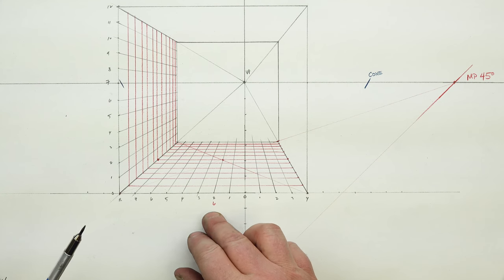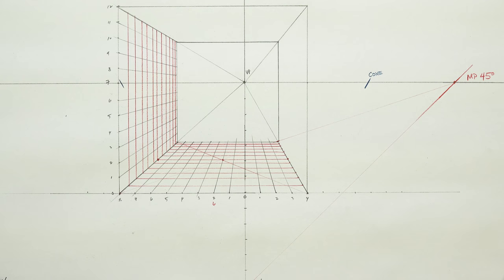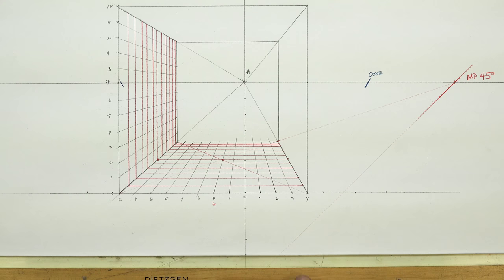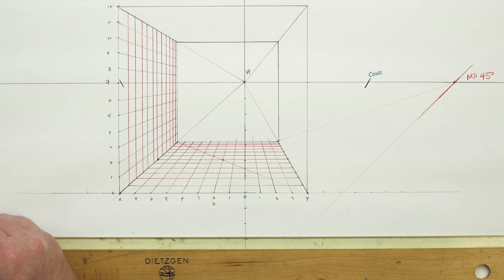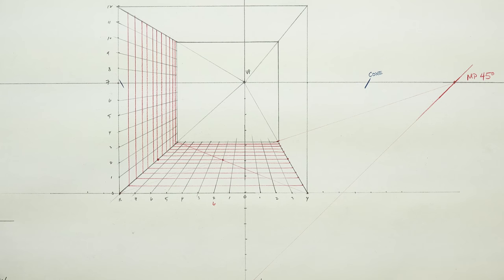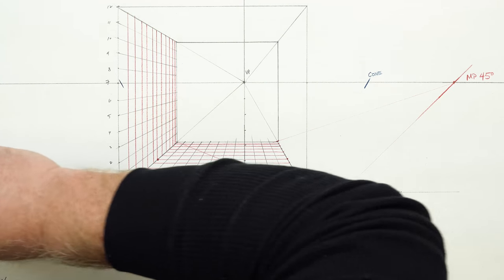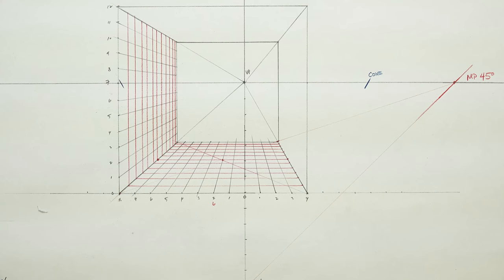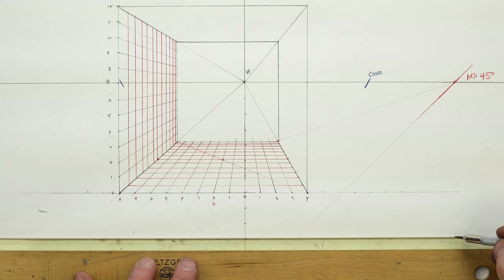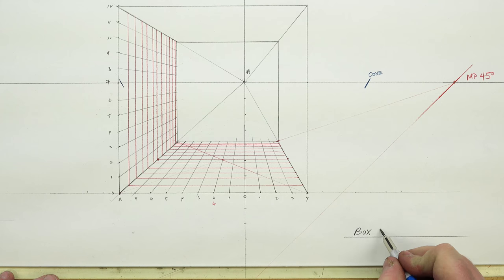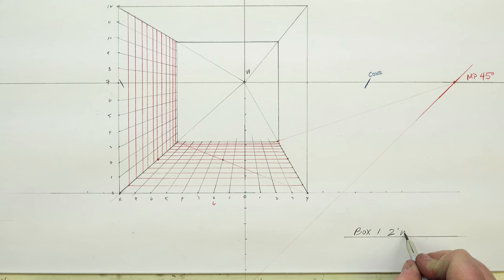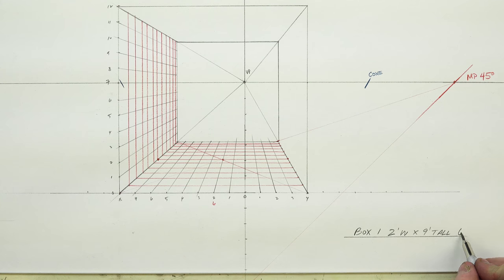The next step is, in our room, let's put some boxes. Box number one is going to look like a bookshelf on the wall. So box one: two units wide by nine units tall, and it's going to be six units deep. Let's figure out where we're going to place this in our composition. It's going to be one unit deep from the ground line wall out away from us. So if it's one unit away, then we're talking about putting it on this line here.